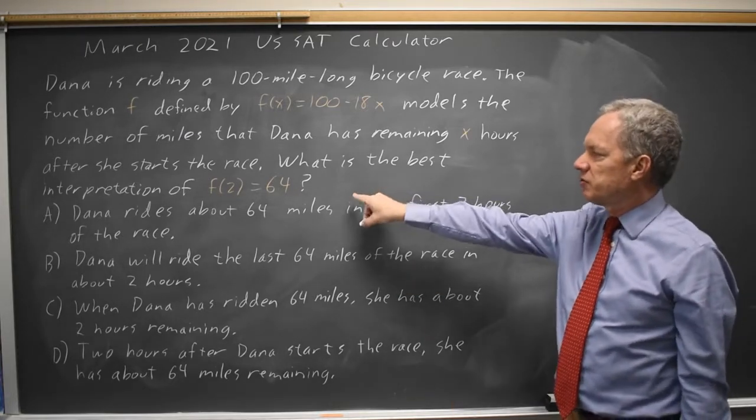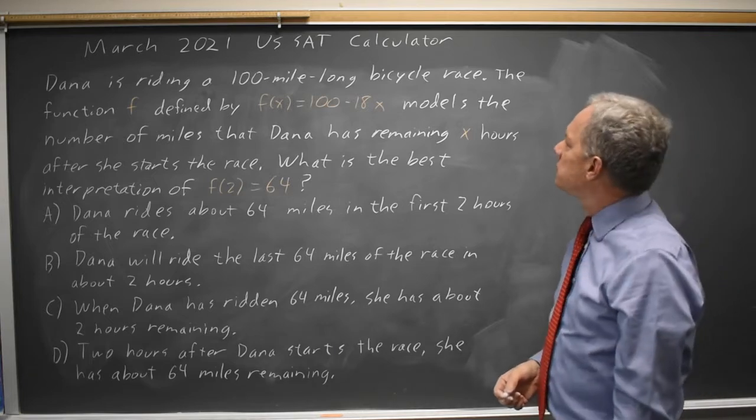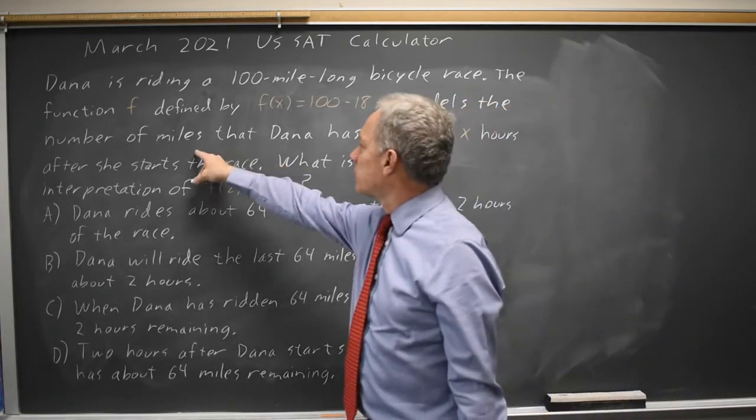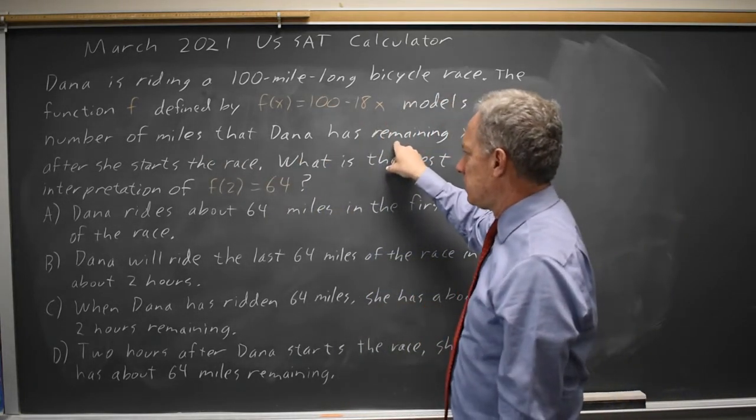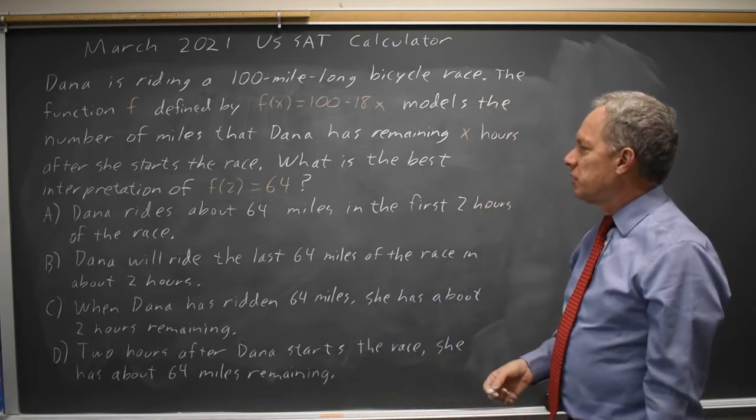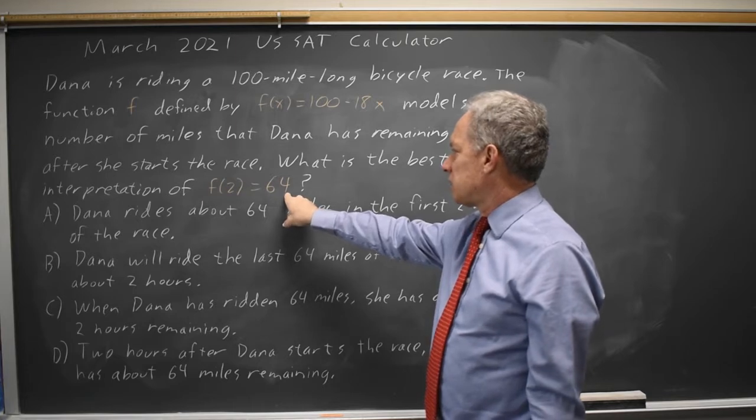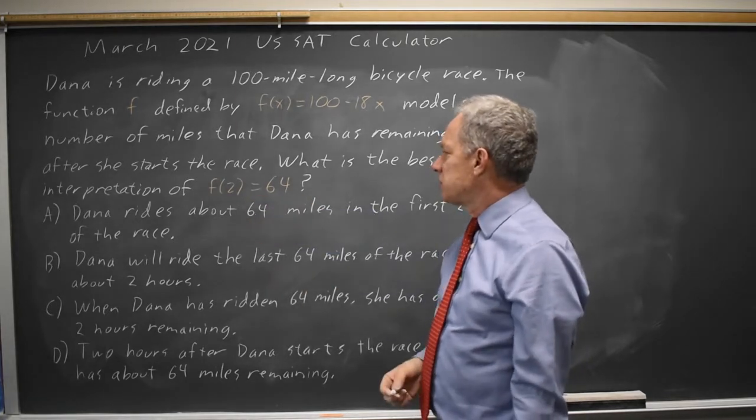They're asking for an interpretation of f(2) = 64. One option is to read carefully where it says f is number of miles Dana has remaining and x is hours after she starts the race. So we want to find one where the 64 is miles remaining and the 2 is hours since she started.